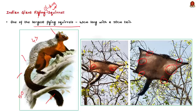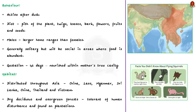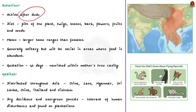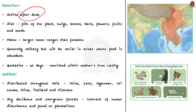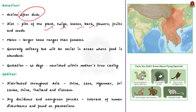These squirrels are most active just after dusk, that is in the late evenings. During this time, they forage or gather food in the tree canopy and tend to consume the pith of plants. In addition to this, they also feed on twigs, leaves, bark, flowers, fruits and seeds.